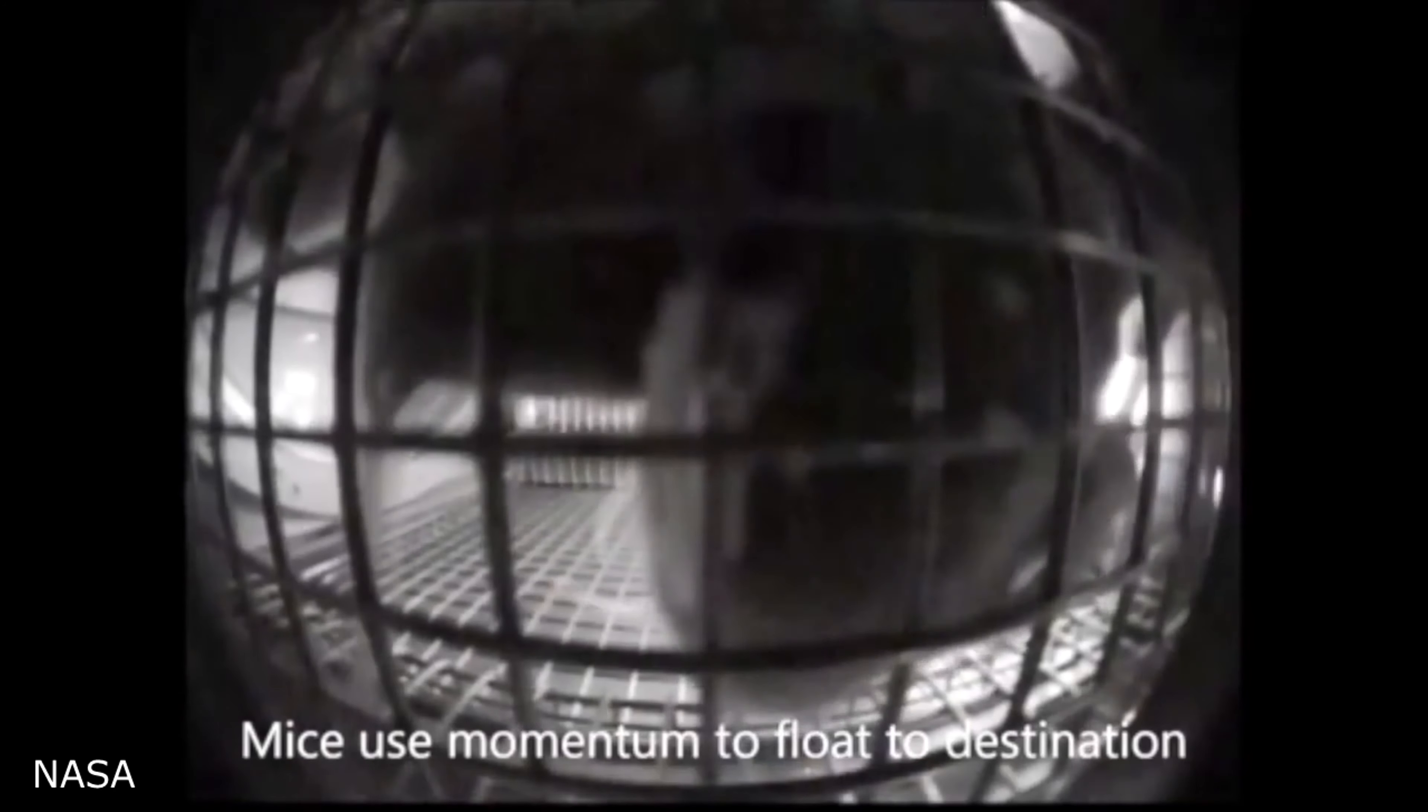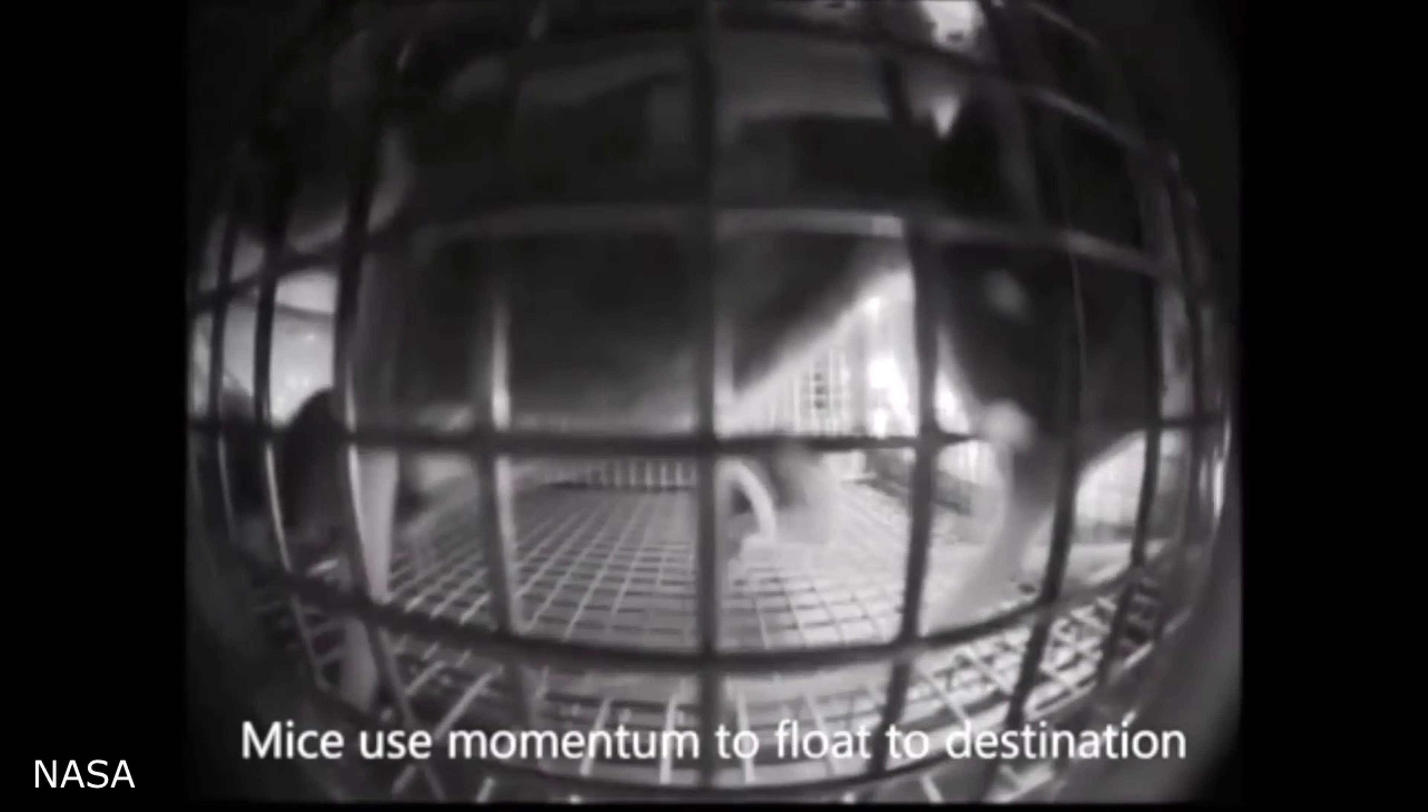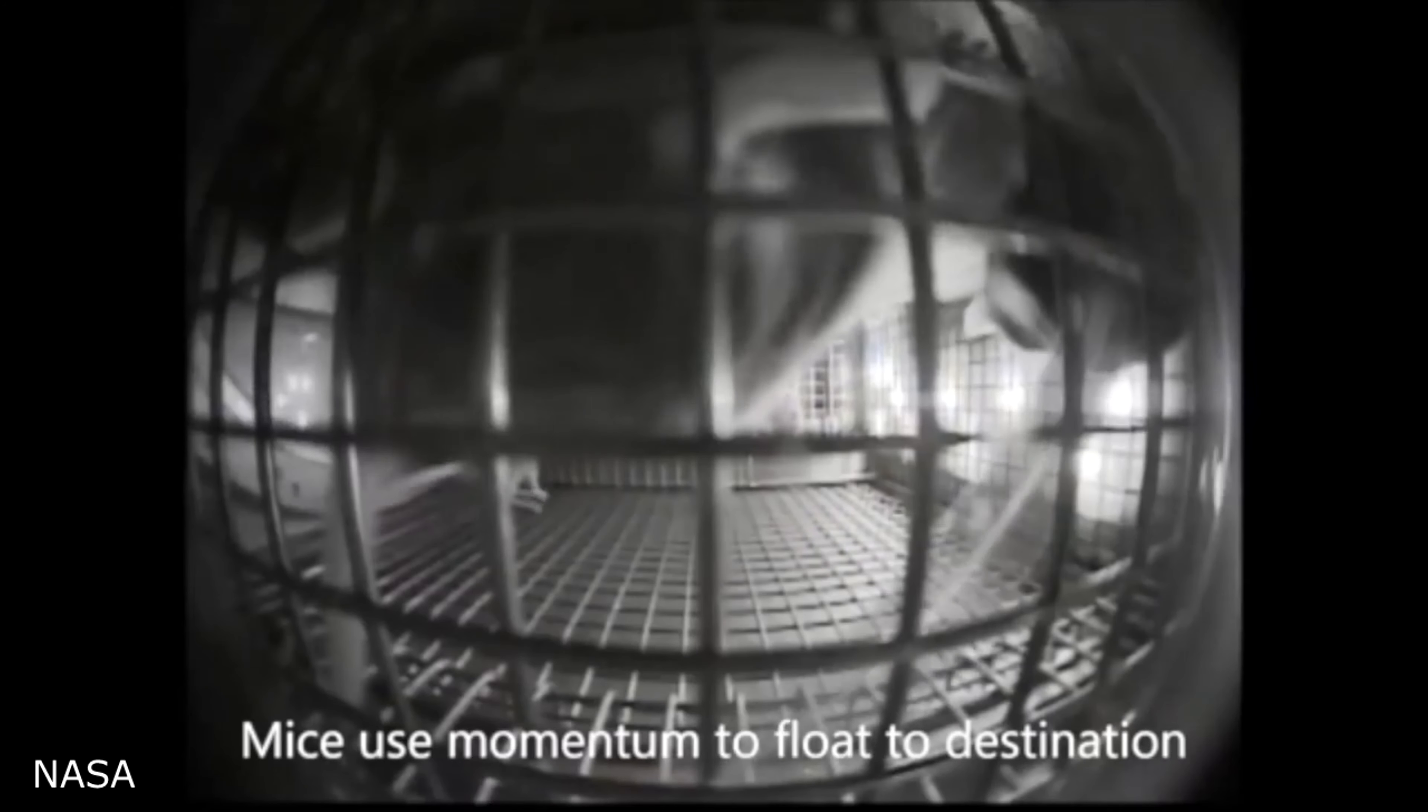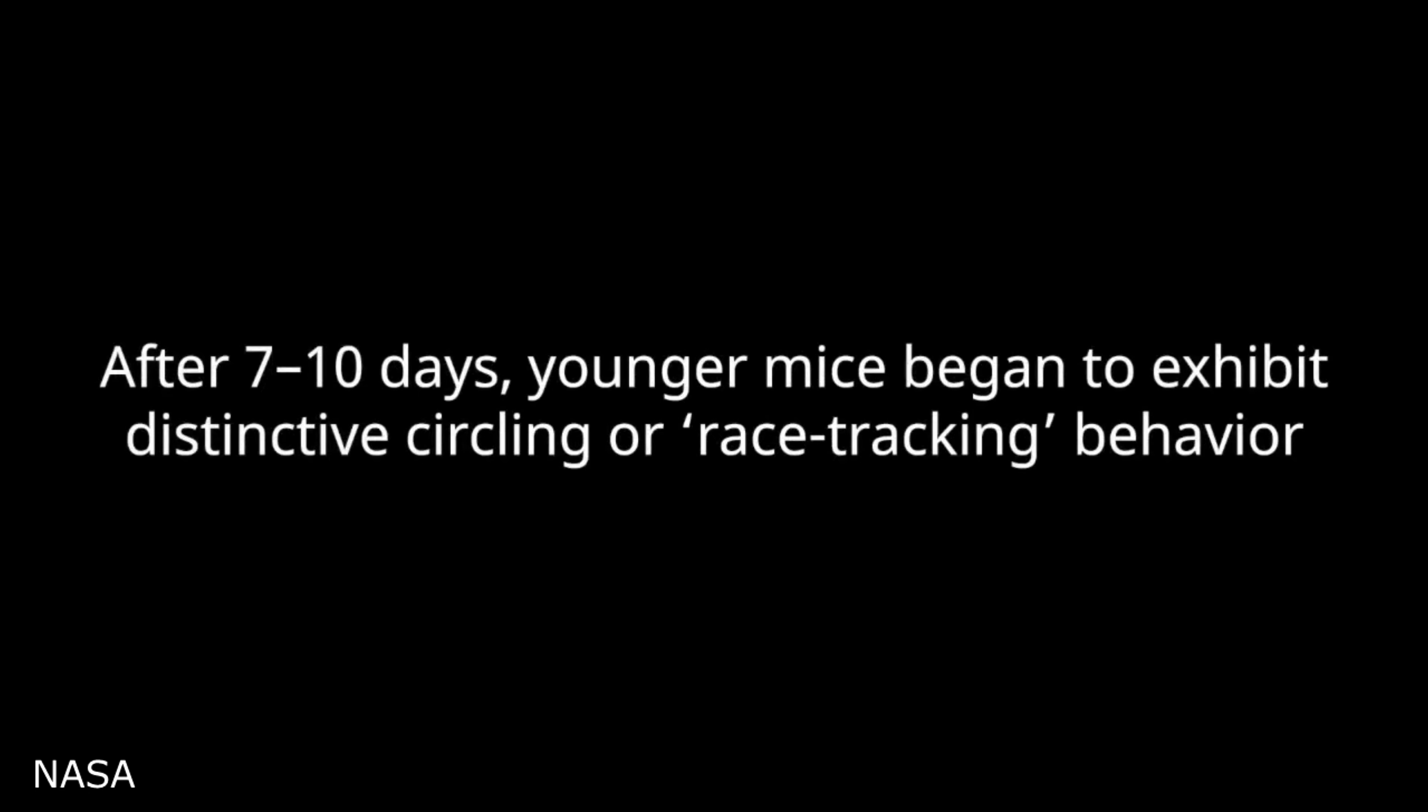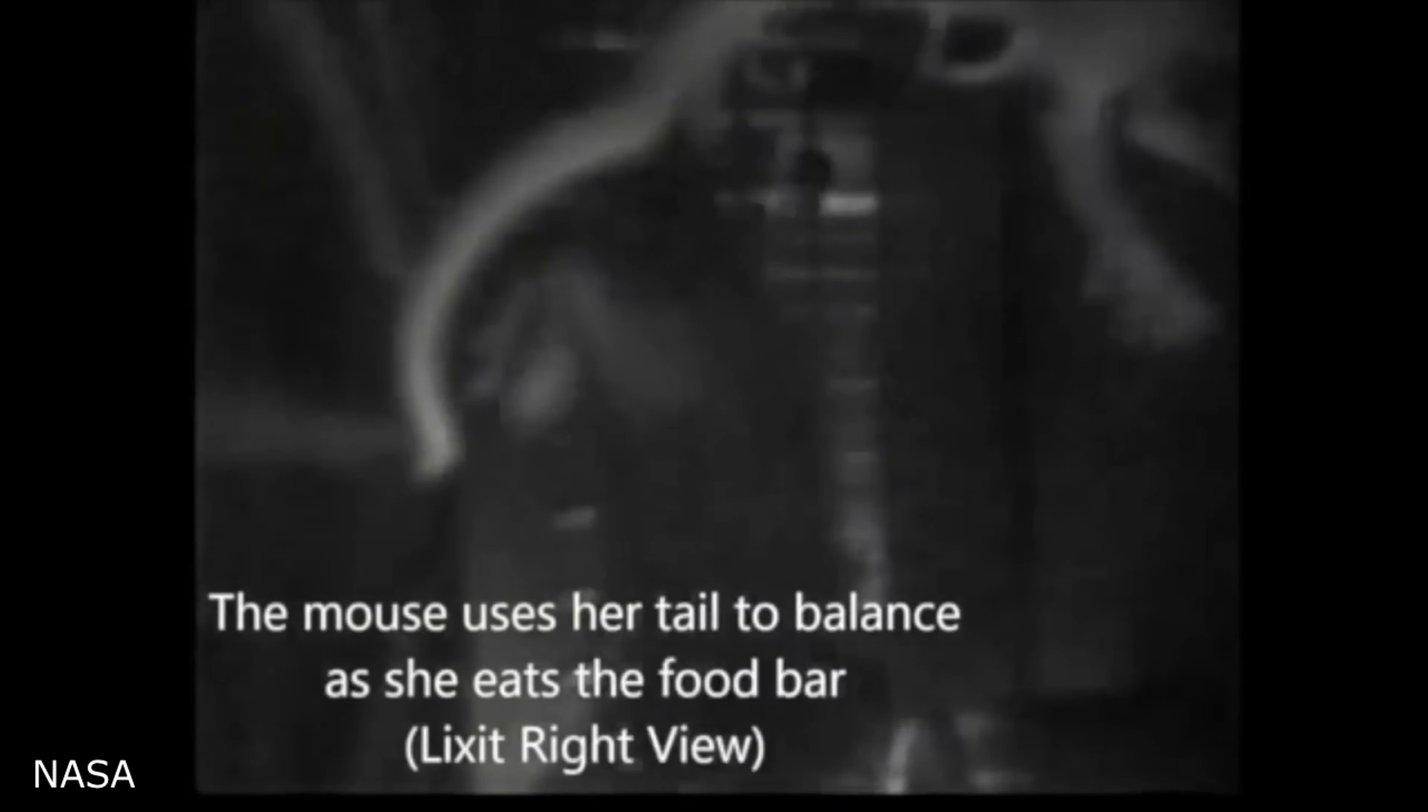These mice were sent to the International Space Station onboard SpaceX's Dragon capsule. After a few days, they learned how to move around in zero gravity and they seemed to really enjoy it. They would spend most of their time just running around the cage. NASA called this racetracking. After a while, the mice learned to use their tail to grip onto the cage so they don't float away.